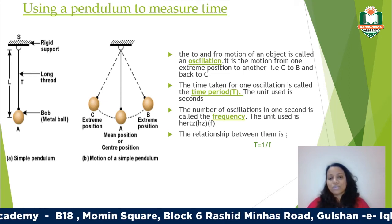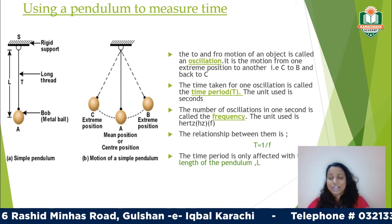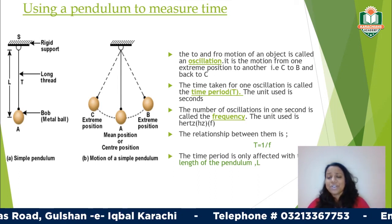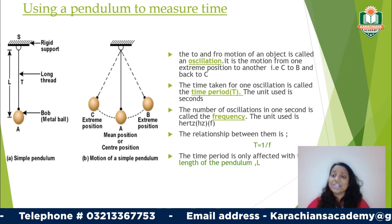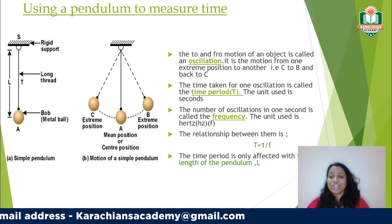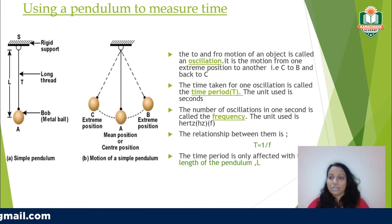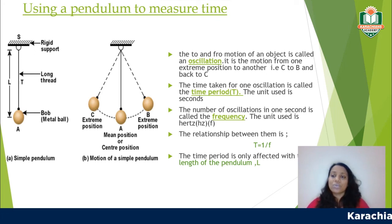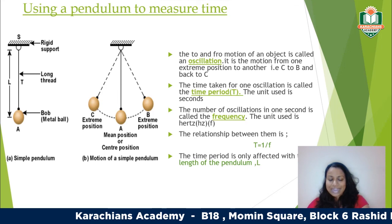The only factor that affects the time period of a pendulum is its length. If you increase the length, the time period increases; if you decrease the length, it decreases. Changing other factors — such as the size of the metal ball or the string material — does not affect the time period. Only the length of the pendulum affects the time period.